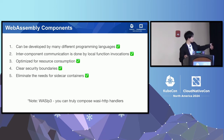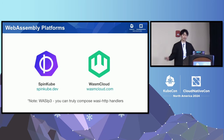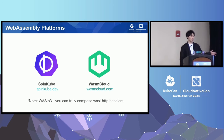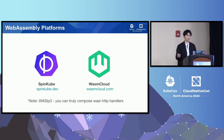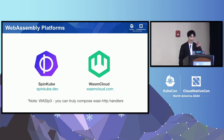For WASI P2 today, two great open source projects enable component composition: SpinKube and WasmCloud. SpinKube does internal chaining of services with no overhead for two components implementing WASI HTTP. WasmCloud uses nats and wRPC for low-latency communication. I contribute to WasmCloud and maintain SpinKube.